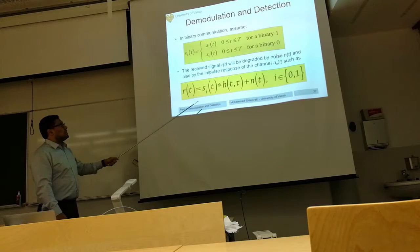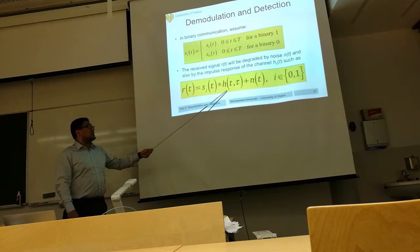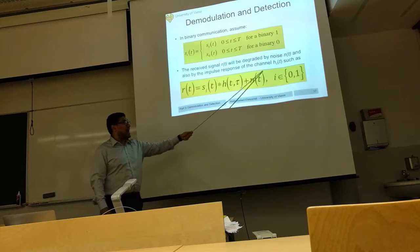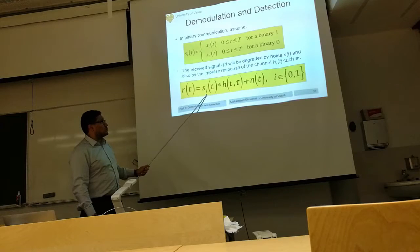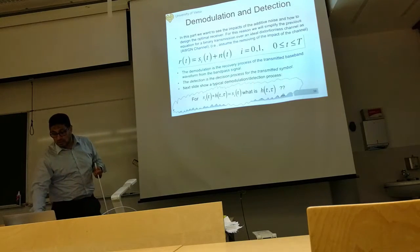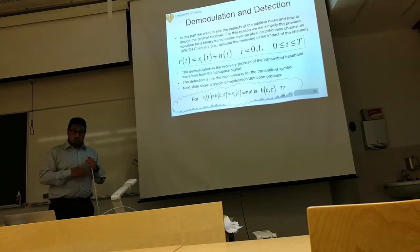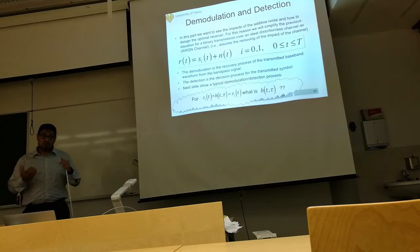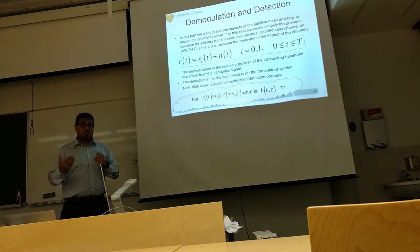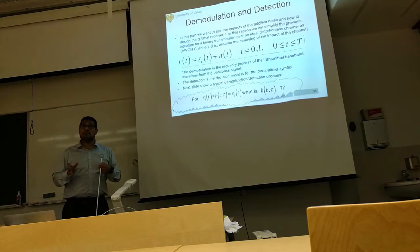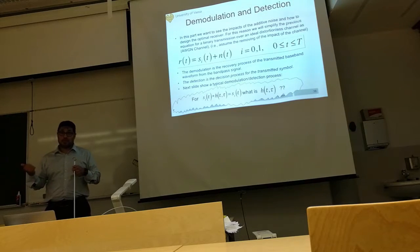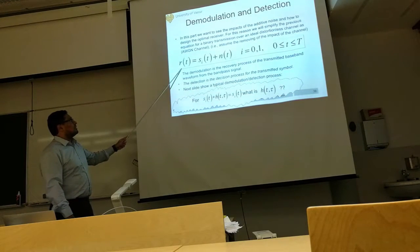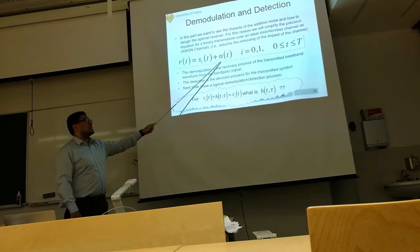The received signal will be the transmitted one convolved with the channel impulse response, as we studied last week, plus the additive noise. We mentioned the impact of the channel impulse response, which could be represented by multi-path and also time-varying linear systems, but we will study this later. Today we consider that we have a perfect channel — it will not change anything of the transmitted signal. There is no corruption and no distortion. Then the received signal will be S1(t), the transmitted signal, plus the additive noise.